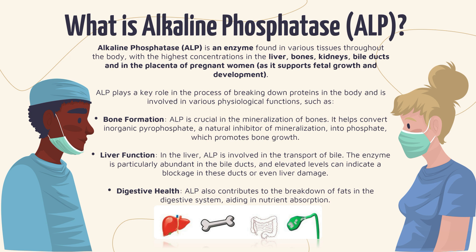So what is alkaline phosphatase or ALP? Alkaline phosphatase is an enzyme found in various tissues throughout the body with the highest concentrations in the liver, the bones, the kidneys, the bile ducts, and in the placenta of pregnant women as it supports fetal growth and development. ALP plays a key role in breaking down proteins in the body and is also involved in various physiological functions such as bone formation, liver function, and digestive health.